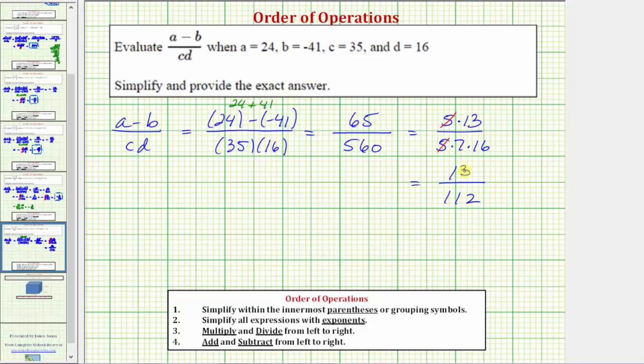The only common factor between 13 and 112 is one, and therefore we now know we have the fraction in simplest form. Going back to the fraction here, another common way to simplify the fraction would be to write 65 over 560, and then divide the numerator and denominator by five, which gives us an equivalent fraction. 65 divided by five is equal to 13, and 560 divided by five is equal to 112. So there are a couple of ways to show the simplification of the fraction.